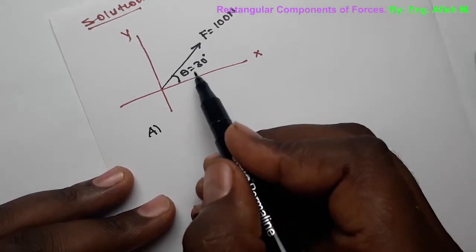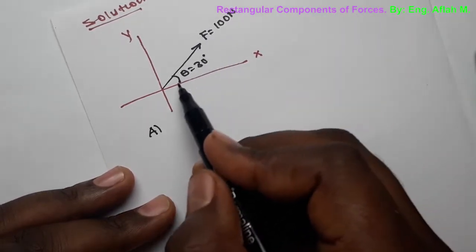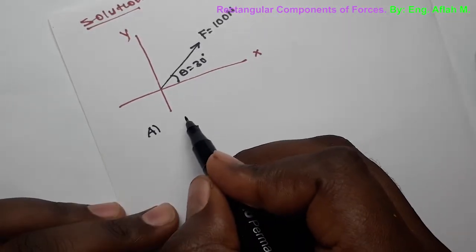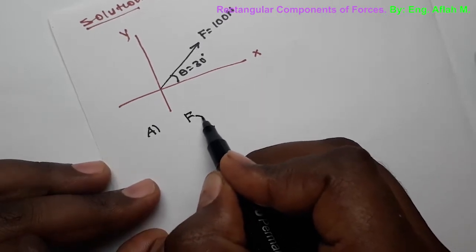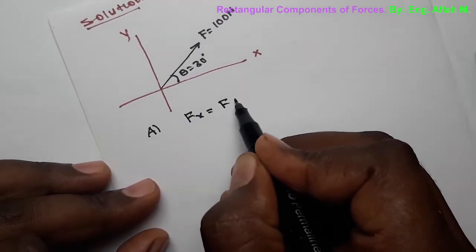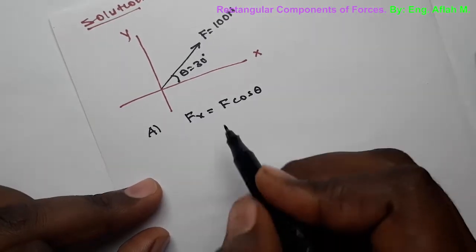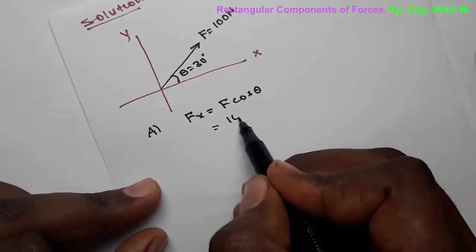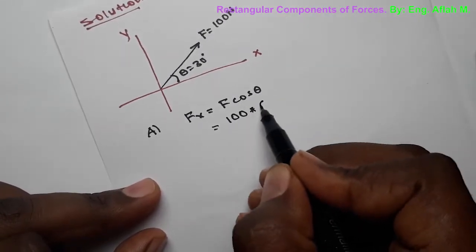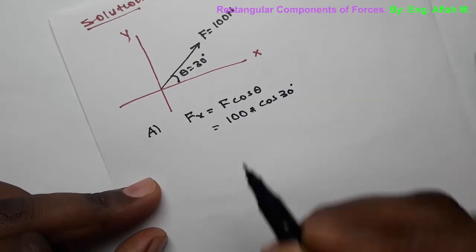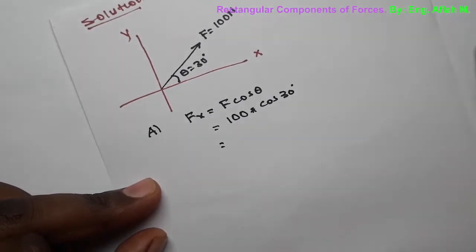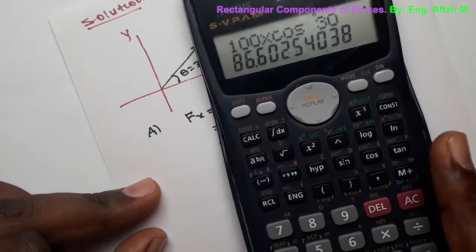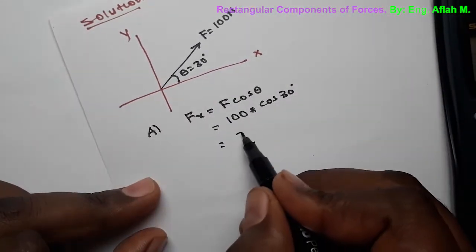Since the force F makes an angle theta with the X-axis, FX equals F times cosine of theta. Here F equals 100 Newtons, so FX equals 100 times cosine of 30 degrees, which gives us 86.6 Newtons.